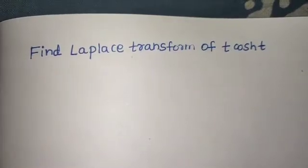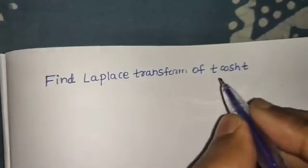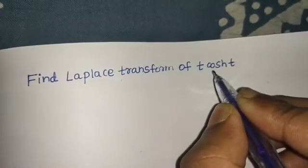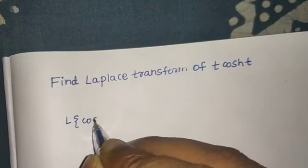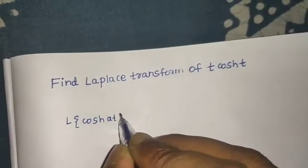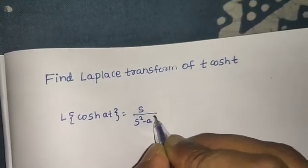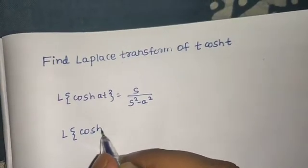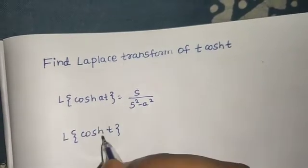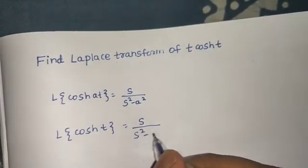Let's see one question from Laplace transform — we need to find the Laplace transform of t·cosh(t). Now if this question were to find the Laplace transform of simply cosh(t), we have a formula: Laplace of cosh(at) is s divided by s² minus a². So if we replace a by 1, we get cosh(t), and its Laplace transform will be s divided by s² minus 1.